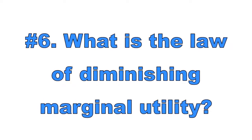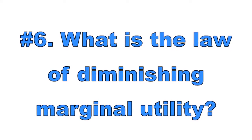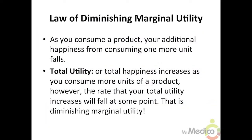Number six: What is the law of diminishing marginal utility? The law of diminishing marginal utility states that as you consume a product, at some point your additional happiness from consuming one more unit will fall. For example, you just ate your fourth taco and realized that the third taco gave you more additional satisfaction than the fourth taco — that's because of diminishing marginal utility.